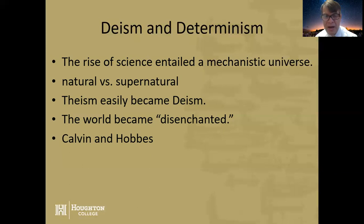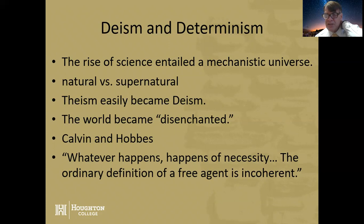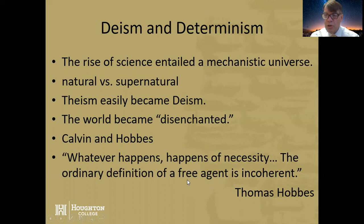Hobbes also as a philosopher, not particularly Christian in my mind, believed in a deterministic universe where everything happens. This is part of what we call the zeitgeist, the spirit of the age, in the 1600s. What we have is this sense that whatever happens, happens of necessity. The idea that the ordinary definition of a free agent is incoherent. They would say in this time period that the idea of us having any freedom at all doesn't make any sense. That's a quote from Thomas Hobbes himself.